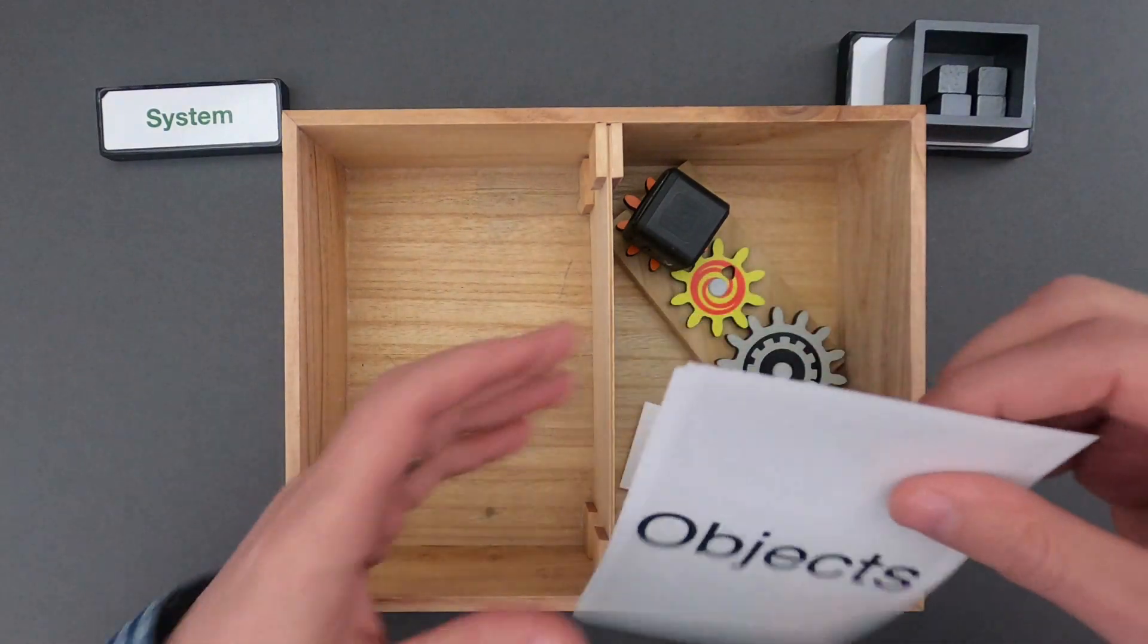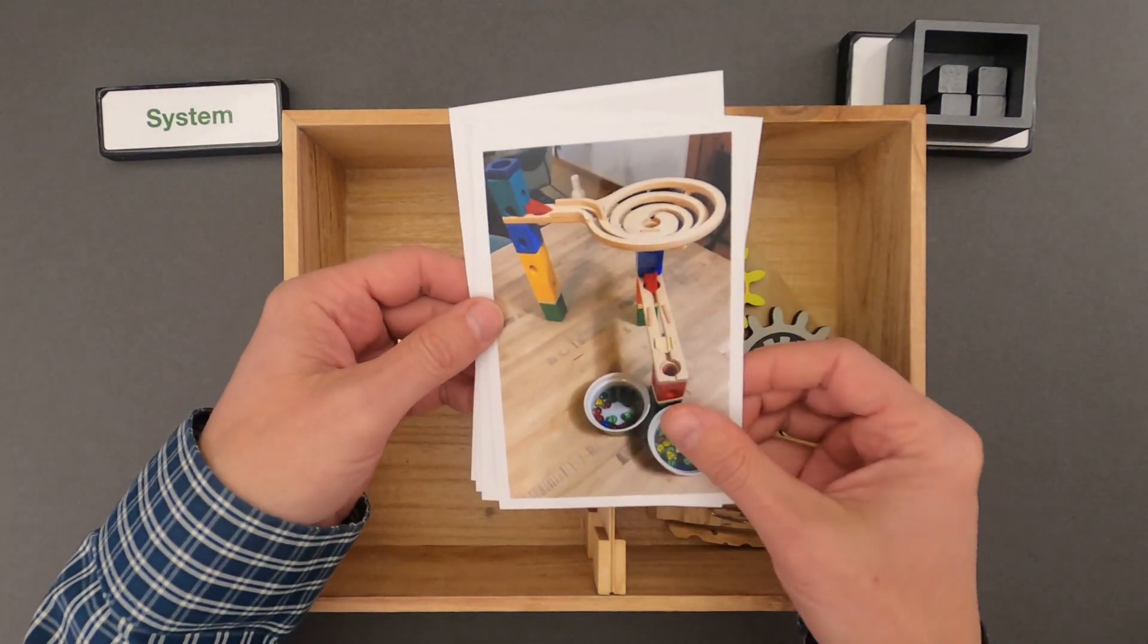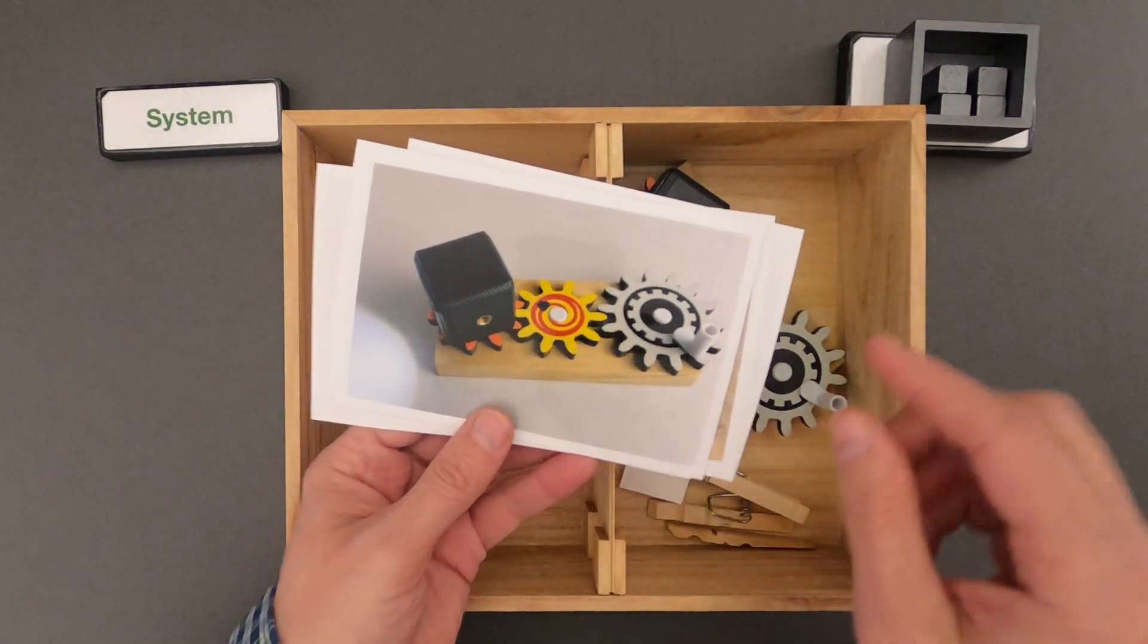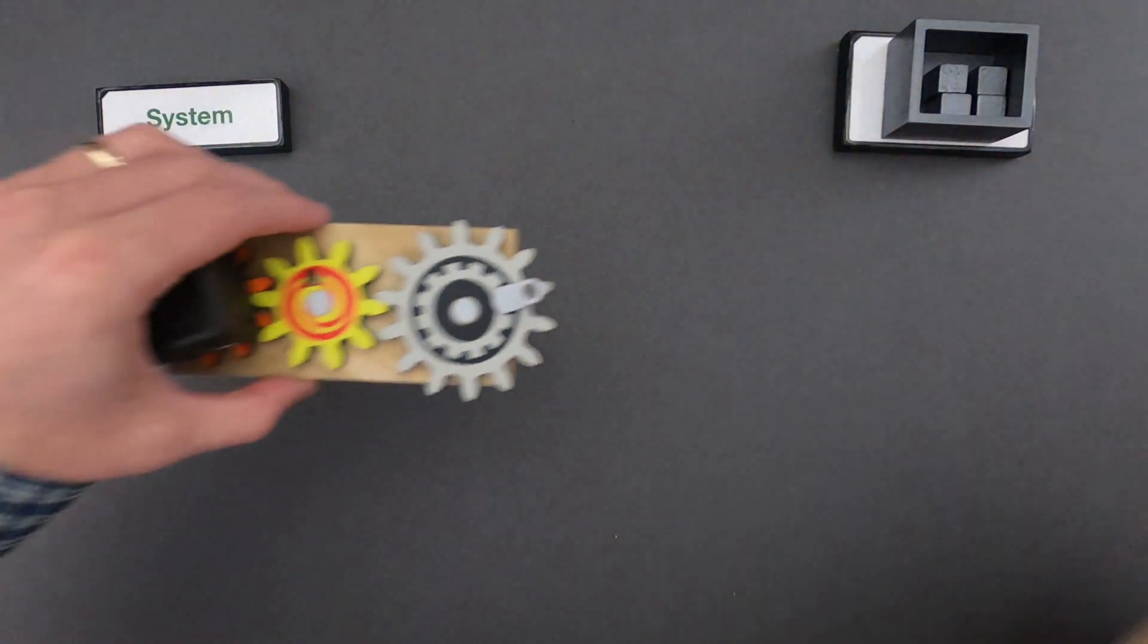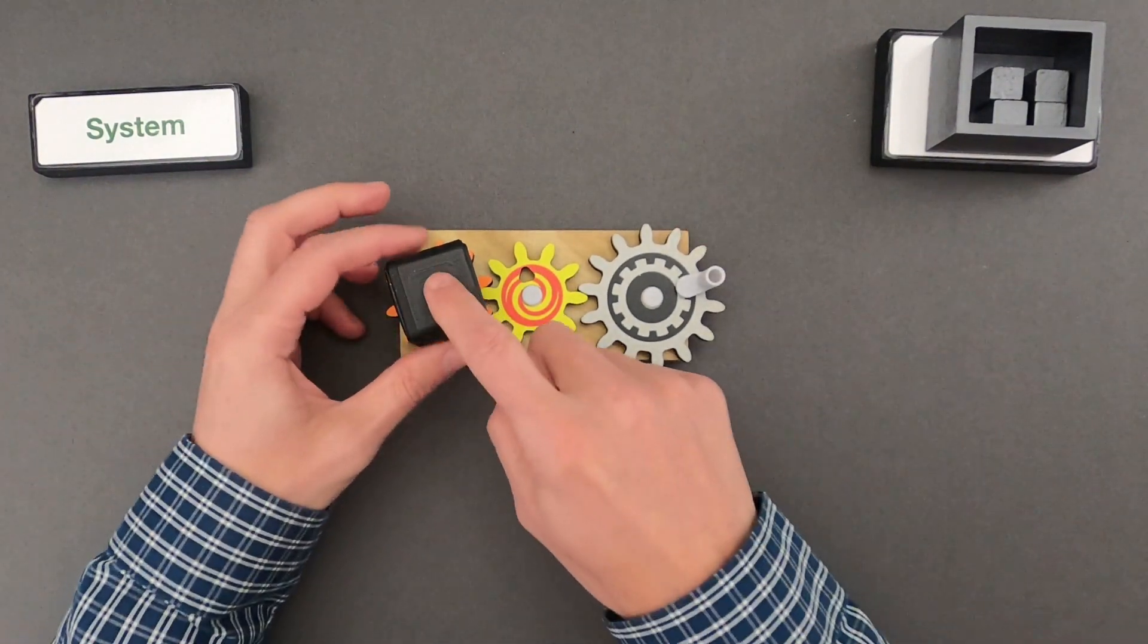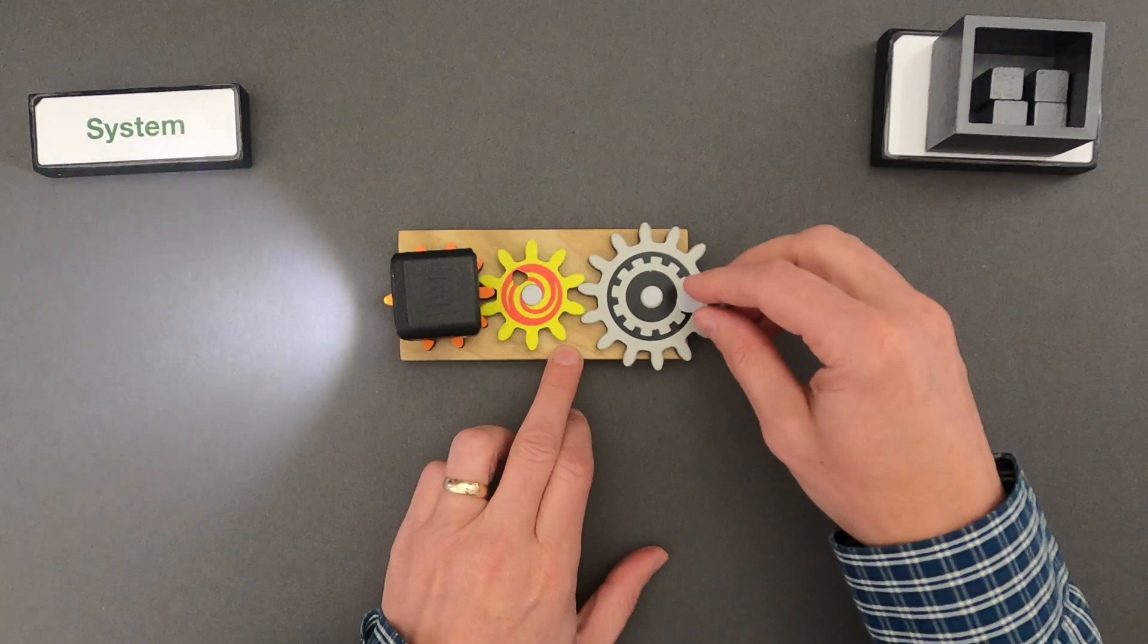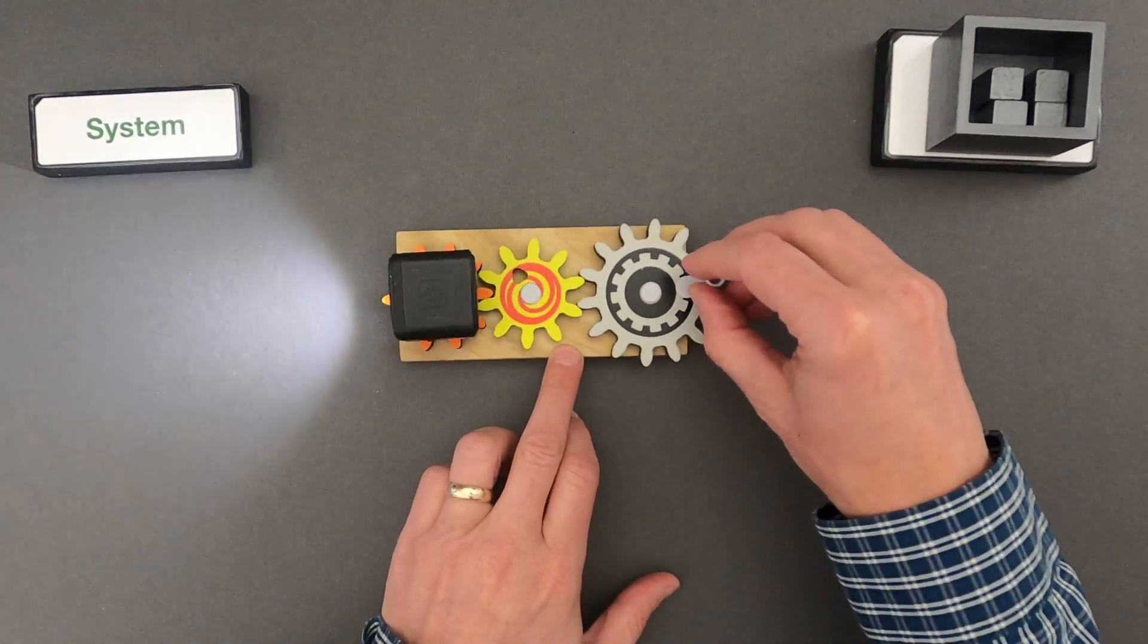After watching this video, you should be able to understand and investigate systems like a marble run or an ecosystem in a food web. But I'm going to start by showing you my thinking around a simple geared searchlight. So the first thing you should always do when you're looking at a system is you should define the system. Let me play with it for a second. So there's a light here, and I can rotate this gray gear, and then I can search in different directions.